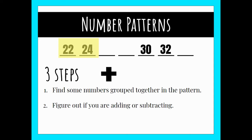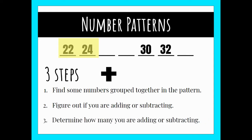My next step and my last step is to determine how many am I adding or subtracting. In this number pattern I see that going from 22 to 24 is not just counting by ones — I'm not just adding one to each number.